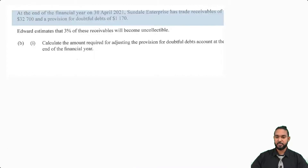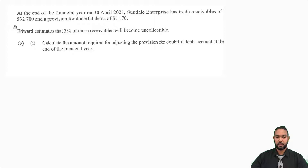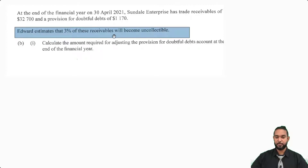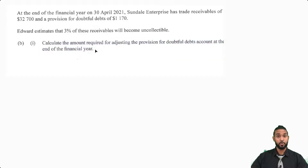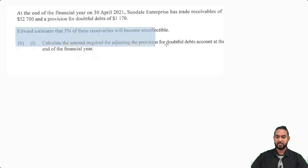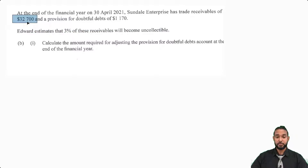Let's take a look at the next part. At the end of the financial year on 30th April 2021, Sundale Enterprises has trade receivables of $32,700 and a provision for doubtful debts of $1,170. Edward estimates that 3% of these receivables will become uncollectible. We're required to calculate the amount needed to adjust the provision for doubtful debts account. The new provision is 3% of $32,700, which equals $981. Comparing it to the existing provision of $1,170, we can see that it is less.